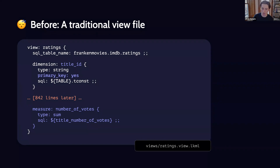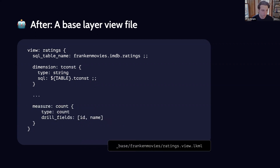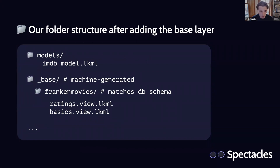What we'll end up with is a 'base layer' — a number of view files in a folder that are all auto-generated and that we never touch by hand. Those view files only ever get changed by rerunning 'create view from table.' If you've used dbt before, you're probably familiar with this concept — it's like the thin layer that sits on top of your data warehouse tables. We group all of these into subfolders that match the name of the schema in the data warehouse, inside an overall folder called '_base' where all our base layer lives. The underscore brings it to the top of the file tree when sorted alphabetically.